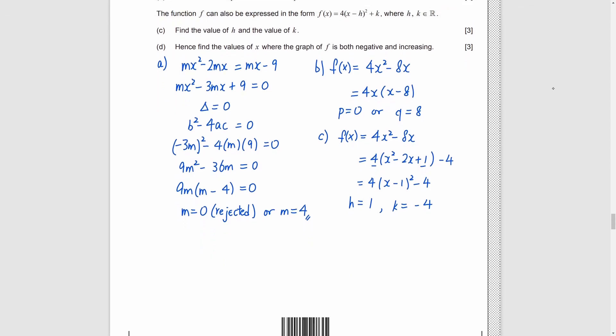Part D, we need to consider f is negative and increasing. First, set f to be smaller than 0. We get an inequality. And simplify it to be x minus 1 square is smaller than 1. So, x minus 1 is between negative 1 and 1. And thus, x is between 0 and 2.